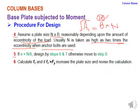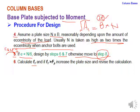Once B and N are known, check which case applies for the moment base plate. Case 1: if eccentricity e < N/6, follow steps 6 and 7. If e ≥ N/6, move to step 8 to check whether Case 2 or Case 3 applies.